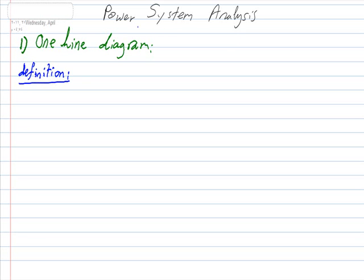Bismillah ar-Rahman ar-Rahim. I will begin a series of lectures on power system analysis. First, I will talk about one of the important topics: the one-line diagram. It shows the interconnection of various components of a symmetrical balanced 3-phase power system by standard symbols on a single-phase basis. This is called the one-line diagram or single-line diagram.